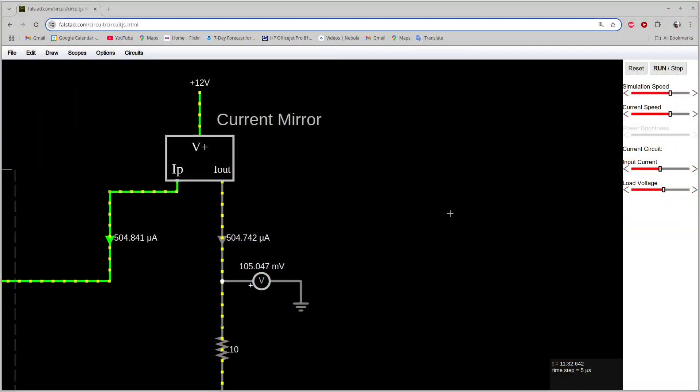This time I'm going to start with one called the current mirror. The current mirror is a circuit that has a power connection and two terminals: the programming terminal and the output terminal.